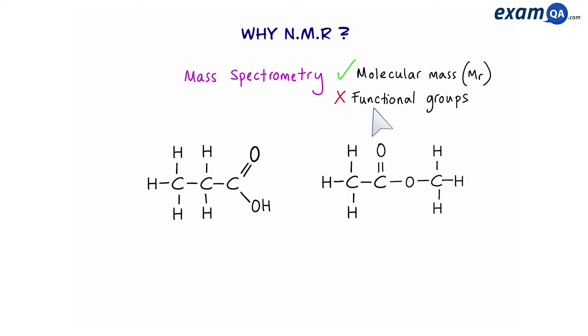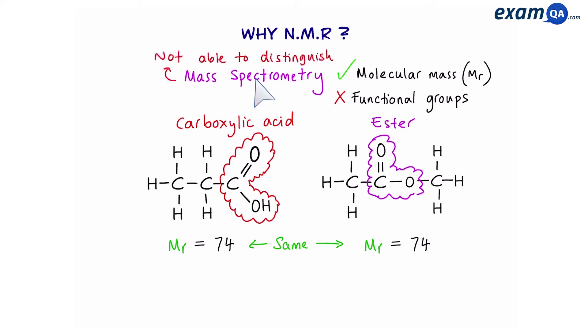So here's an example. We have two different molecules which have the same MR. However, on the left we have a carboxylic acid and on the right we have an ester. And since mass spec will not take functional groups into consideration, we can't use it to distinguish between these two molecules.